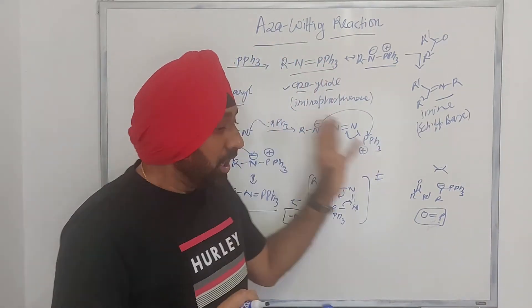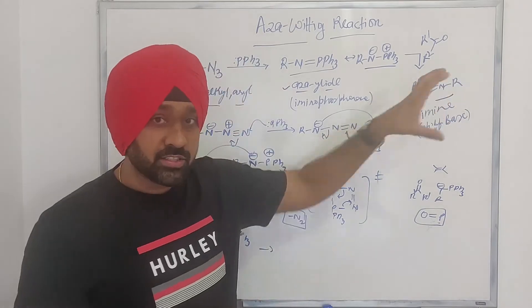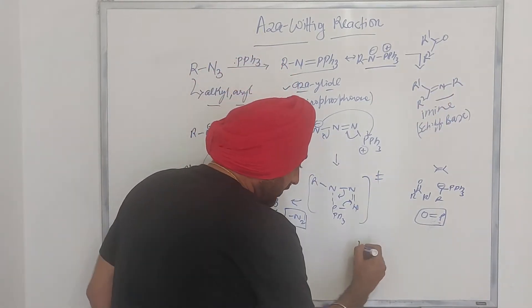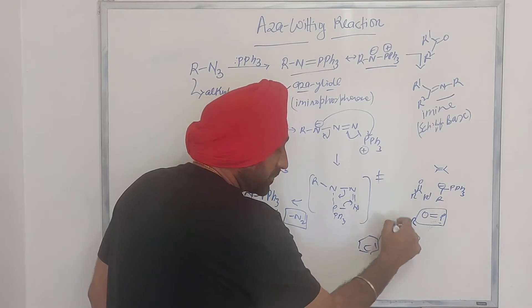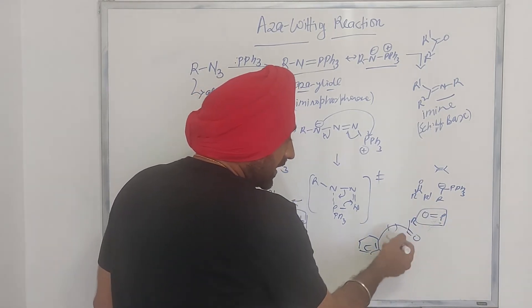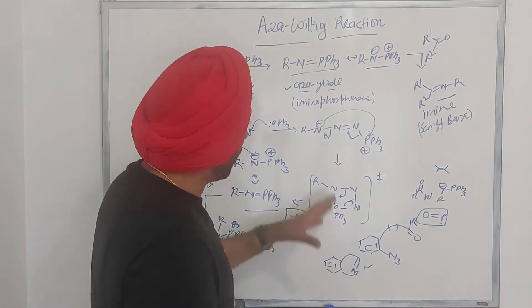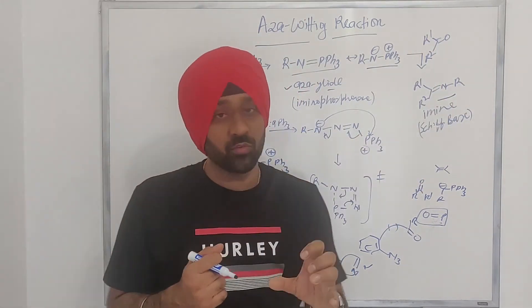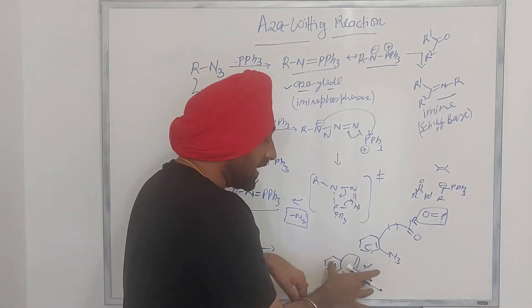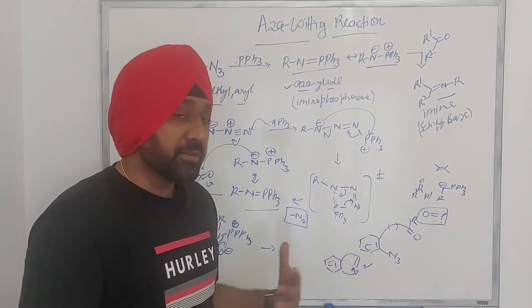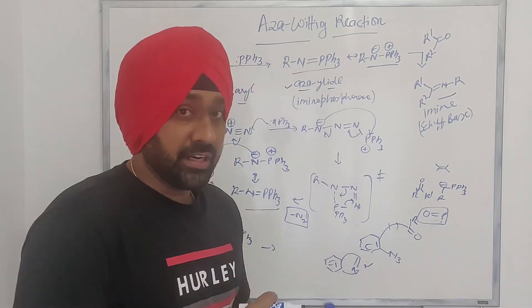The maximum utility of this reaction is in the synthesis of 6- or 7-membered heterocycles. For example, if you have a ketone somewhere in your chain and an azide, and intramolecularly you want to form a particular imine, the Aza-Wittig reaction is probably one of the most important reactions that can give access to such imines. You can then functionalize this imine further — reduce it to generate an amine — making this a very important reaction.